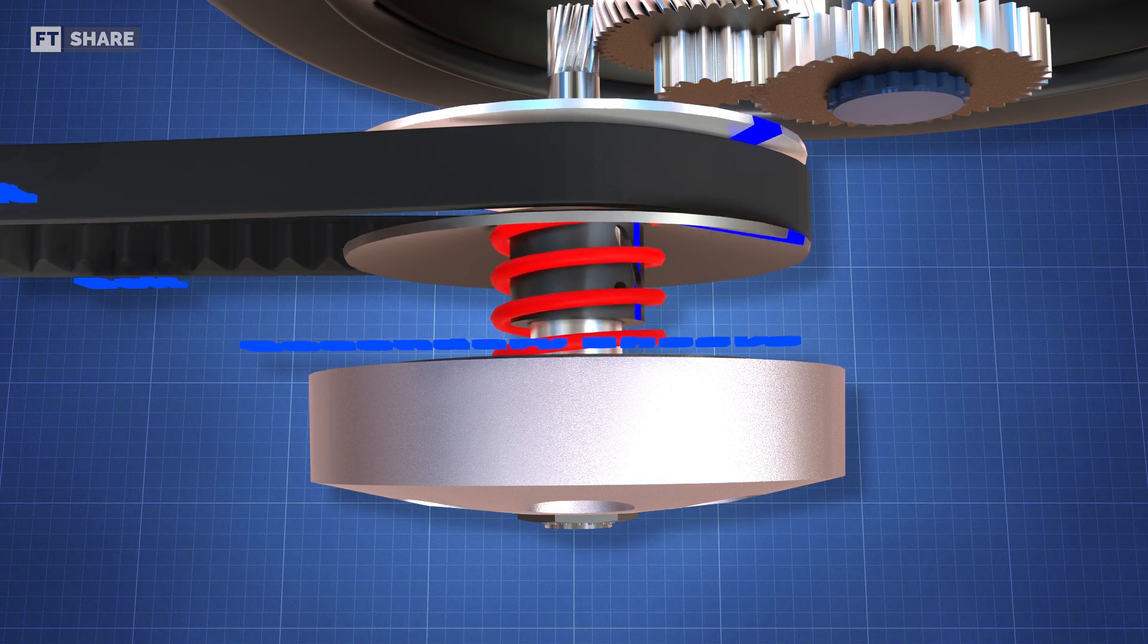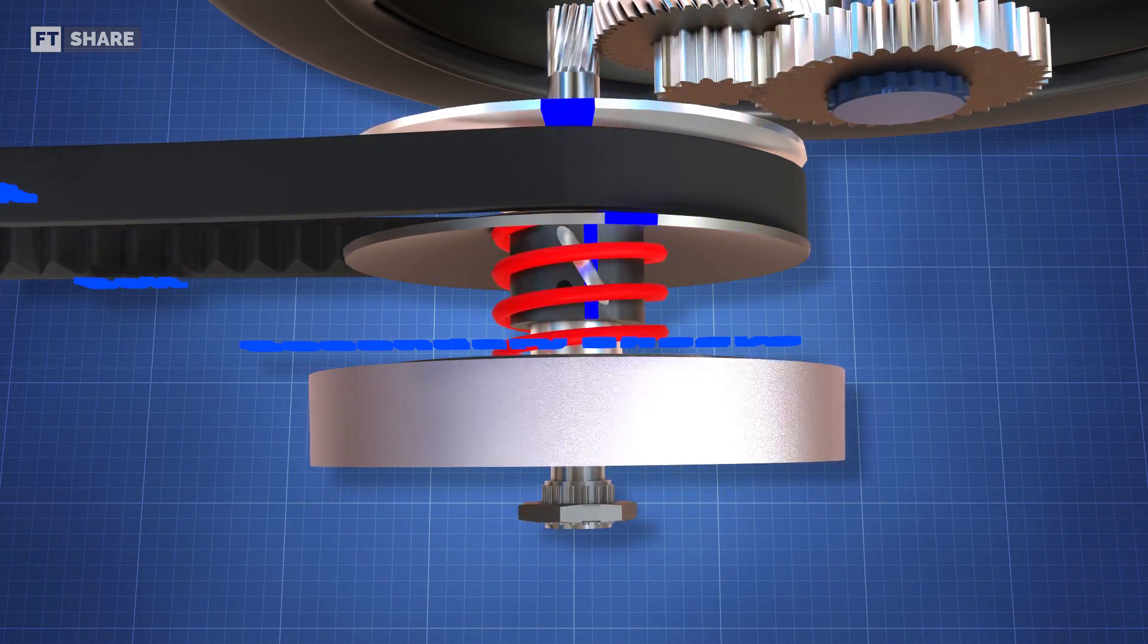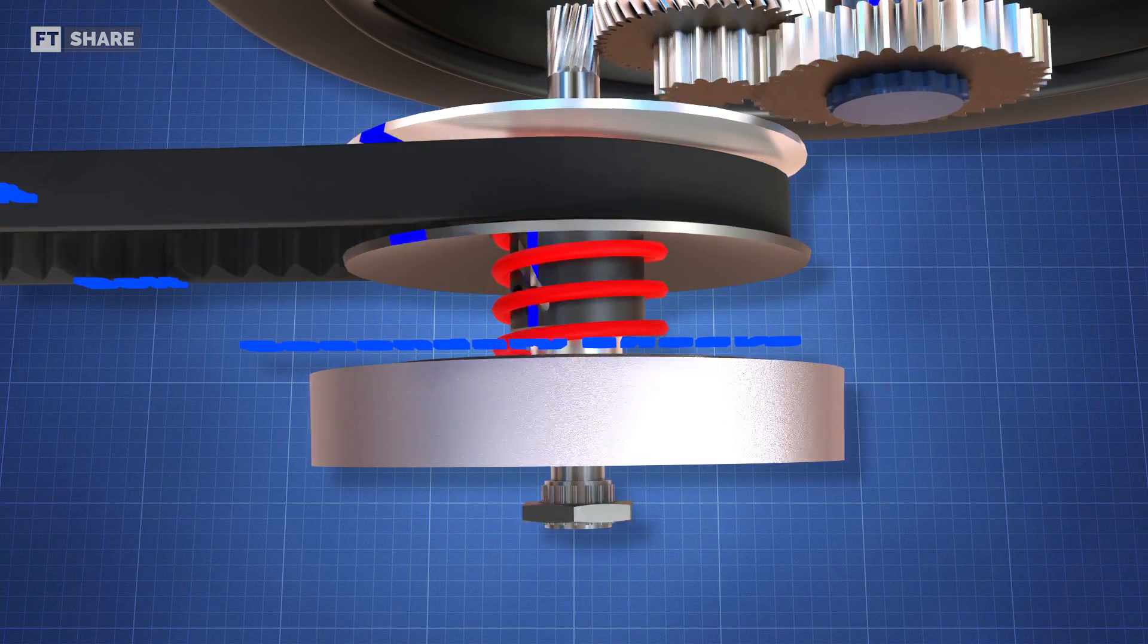More details on the secondary sheave. We'll see a compression spring that functions to keep the sliding plates close together. This condition forces the belt to stay on the largest diameter of this pulley.